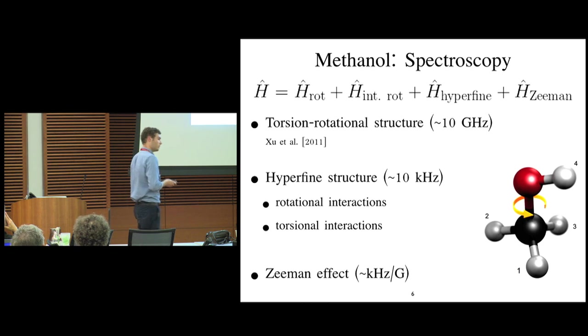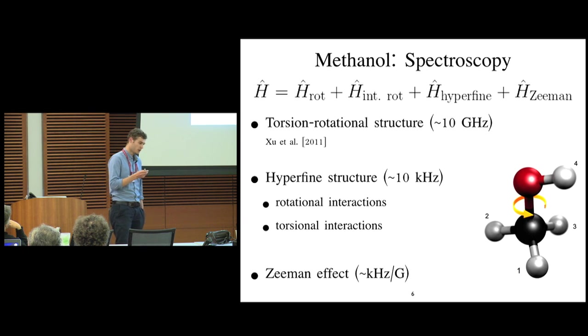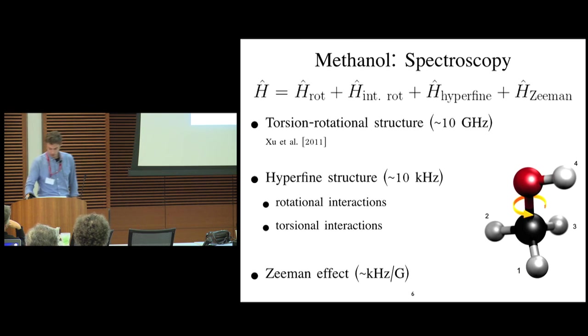And then the Zeeman effect, which is a non-paramagnetic Zeeman effect, so it's proportional to the nuclear magneton, is on the order of kilohertz per gauss. And the Zeeman effect also consists of interactions of the magnetic field with the overall rotation, torsion, and the nuclear magnetic moments.